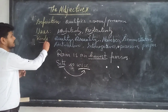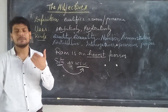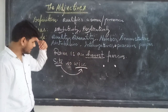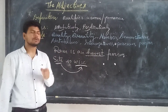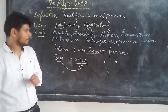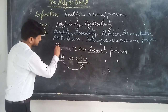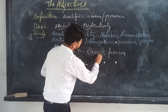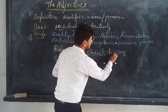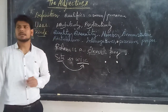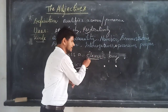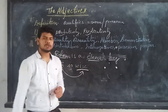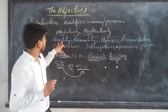Next we will talk about the kinds of adjectives. There are eight kinds of adjectives which we will cover one by one. First, we will talk about the adjective of quality, which describes what kind. For example, 'Rohan is a clever boy.' Here, the word 'clever' is an adjective which talks about the quality of the noun 'boy' or Rohan. This is called an adjective of quality.